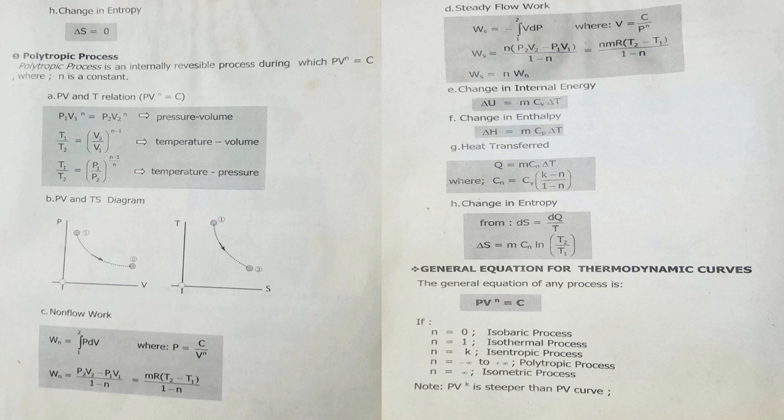The general equation for any thermodynamic process is PV raised to N equals C. If N equals 0, isobaric process. If N equals 1, isothermal process. If N equals K, isentropic process. If N ranges from negative infinity to positive infinity, that is polytropic process. If N equals positive infinity, that is isometric process. Note: PV raised to K is steeper than the PV curve.